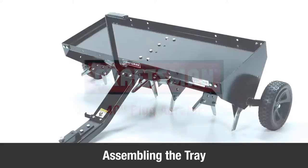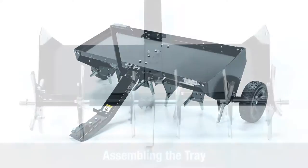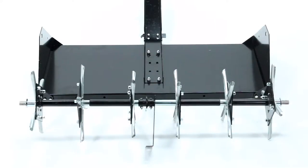In this segment we'll show you how to attach the spool assembly and the wheels to the tray assembly. To begin, turn the tray upside down.